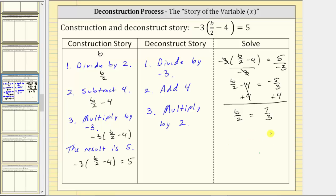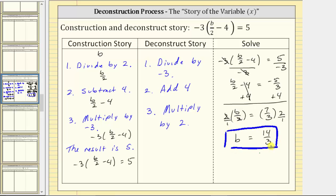The last step in the deconstruct story is multiply by two, so we multiply both sides of the equation by two. We change the order of the multiplication using the commutative property, and since both sides are in fraction form, we write two as a fraction with denominator of one. Simplifying before multiplying, two divided by two simplifies to one, and one times b is b. On the right, nothing simplifies — we multiply numerators and denominators to get fourteen thirds. So the solution to the given equation is fourteen thirds.